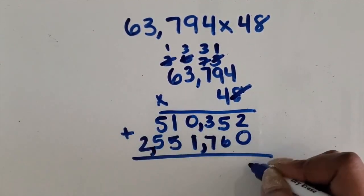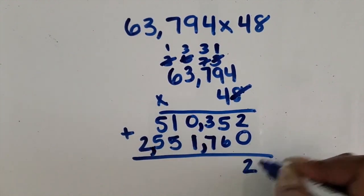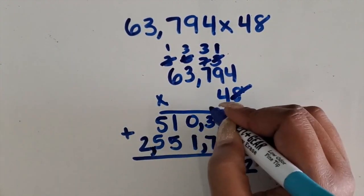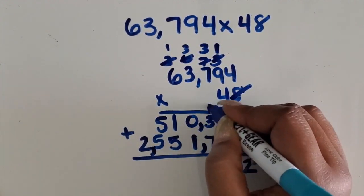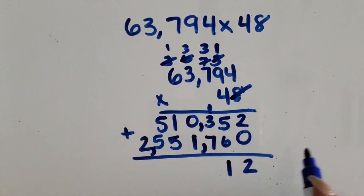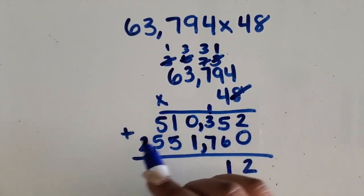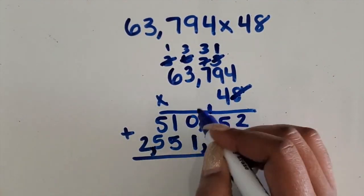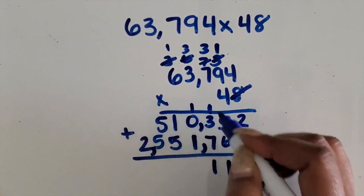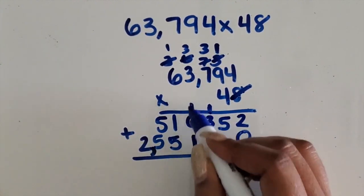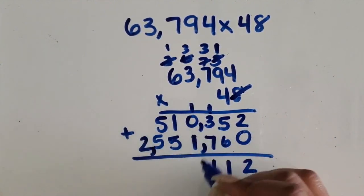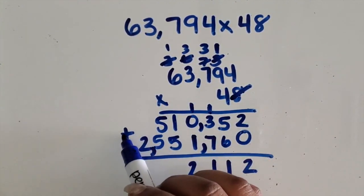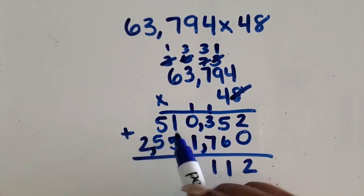2 plus 0 is 2 ones. 5 plus 6 is 11 ones, regroup one of those as 100. 3 plus 7 is 10 plus 1 more is 11, regroup one of those as 1,000. 1 plus 1 is 2,000. 1, 10,000 plus 5.